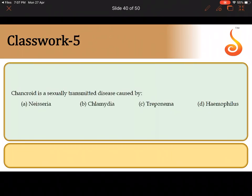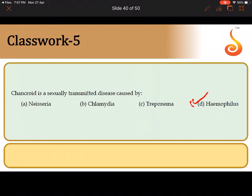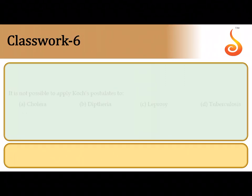The fifth question: chancroid is a sexually transmitted disease caused by a bacterium called Haemophilus ducreyi. So Haemophilus ducreyi is the correct answer — option D.